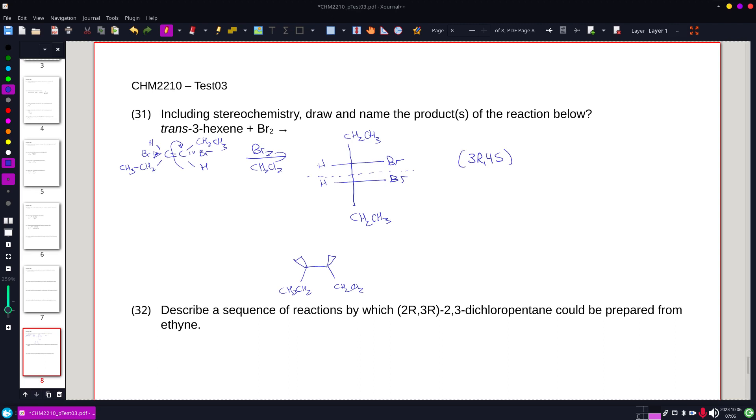Oh, yeah, I got three R, four S, and I've just decided that. And this is 3,4-dibromohexane.